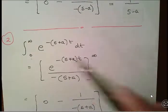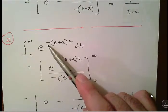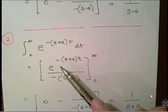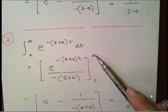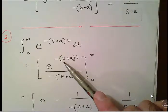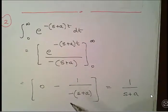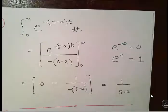For integral two, we have e to the minus st times e to the minus at. It's very convenient to express things in terms of minus, because the minus infinity cancellation helps us again. The calculation is almost identical to the last one, but instead of s minus a we have s plus a. The result is 1 over (s plus a).